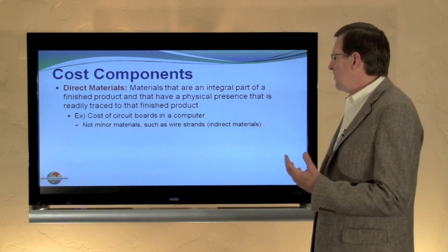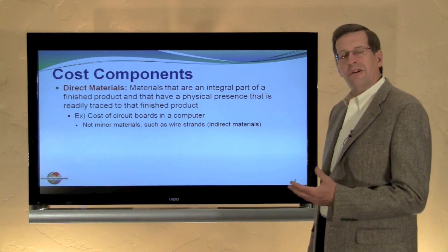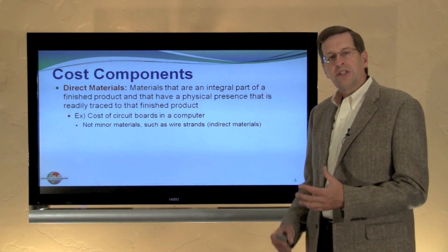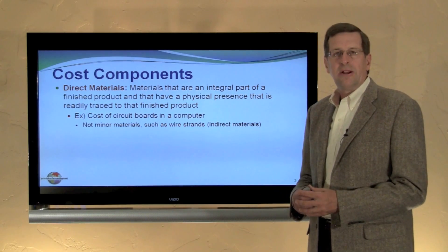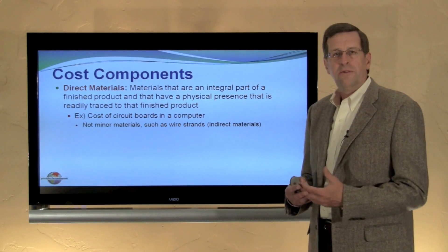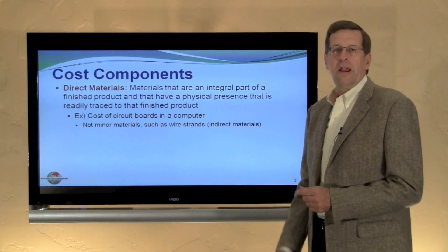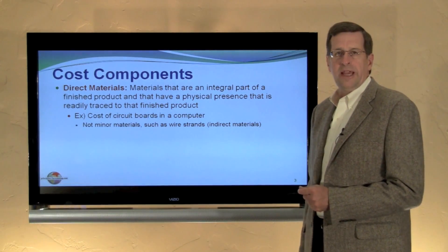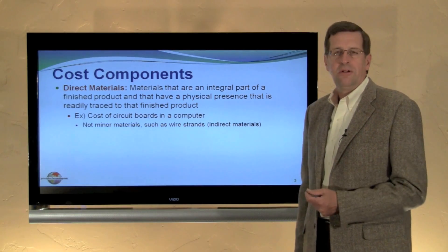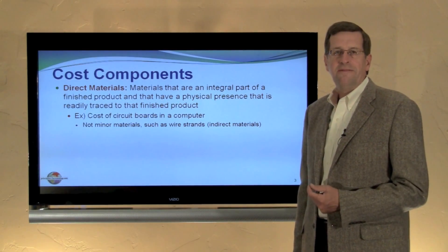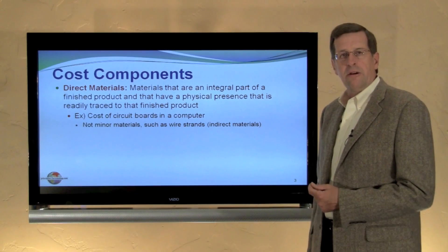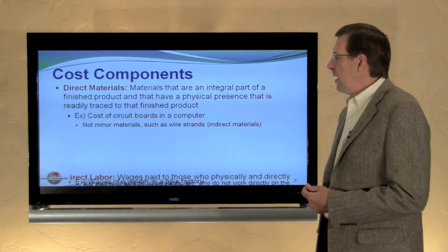For example, small strands of wire, solder, things of this nature — they are simply not practical to trace or account for on a product-by-product basis. And so we include those immaterial cost components as part of our factory overhead, which I'll define in just a moment.